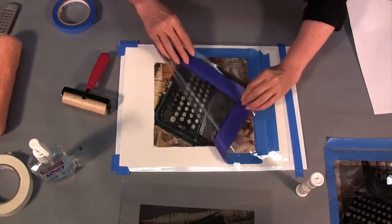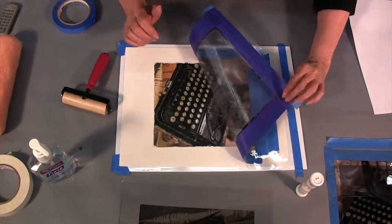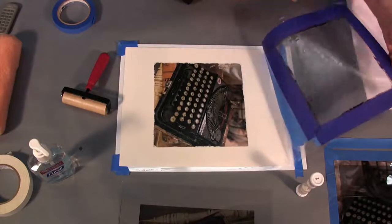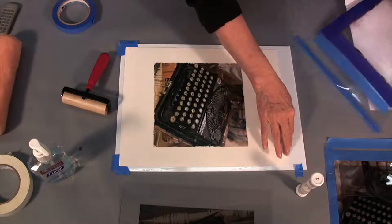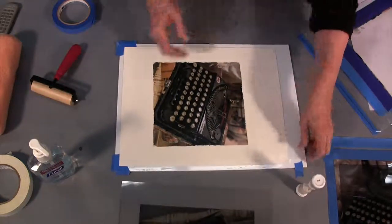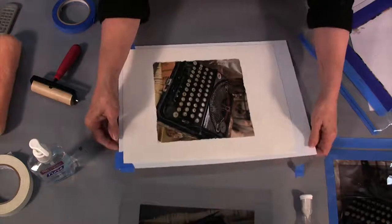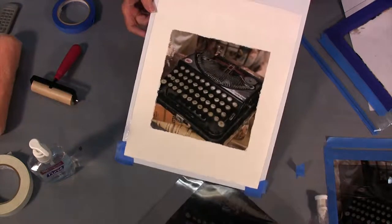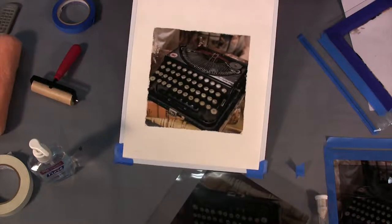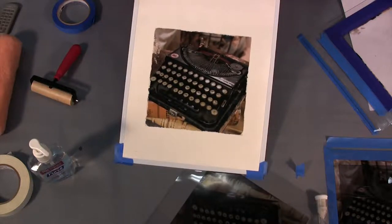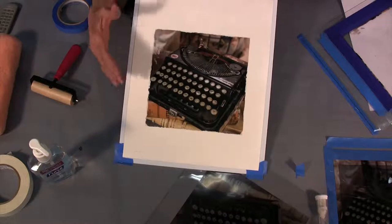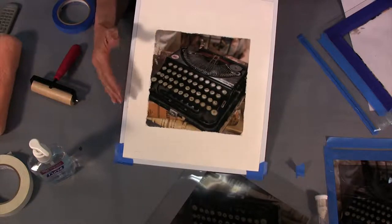Oh this is looking gorgeous. Oh that's perfect. Absolutely perfect transfer. And now I'm going to leave this on this white board. This is a piece of polypropylene. It's a non-absorbent surface. I like to let it stay on this board to dry so that the paper dries completely flat.